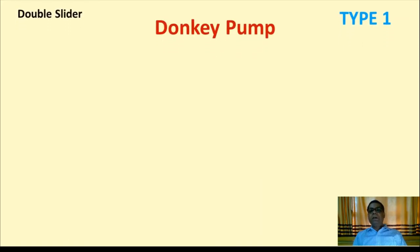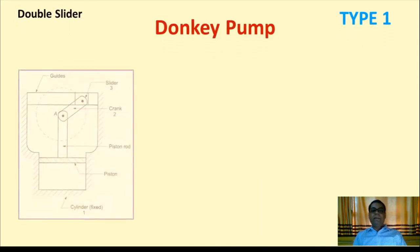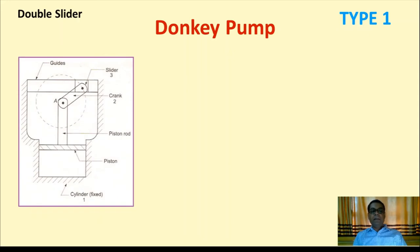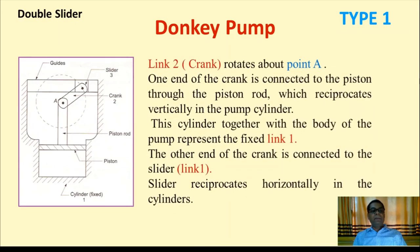Type 1 is the Donkey Pump. In this mechanism, the cylinder is fixed and there is a piston, piston rod, and crank (link 2), slider (link 3), and guides. The crank rotates about point A; one end of the crank is connected to the piston through the piston rod, which reciprocates vertically in the pump cylinder. The cylinder and pump body represent fixed link 1. The other end of the crank is connected to the slider, which reciprocates horizontally in the cylinder.